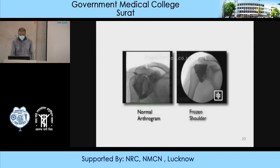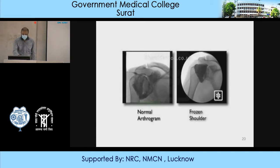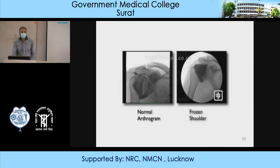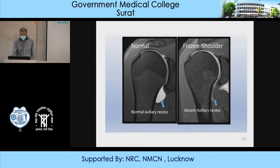As described earlier, in a normal radiograph you can see joint fluid present, but in frozen shoulder there is a clear lack of joint fluid, demonstrating that the capsule is contracted and fluid is decreased. Similarly, in normal arthrography the axillary recess has a good amount of fluid, but in frozen shoulder there is absence of the axillary recess.